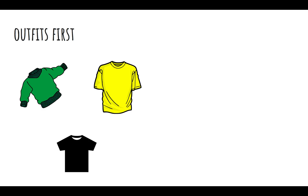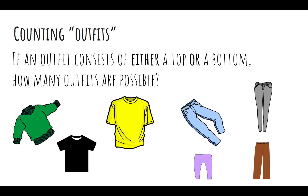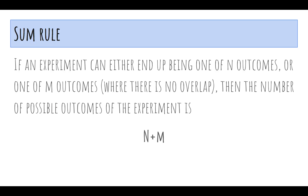Let's say you have three shirts and four pairs of pants. How many outfits are possible if an outfit consists of either a top or a bottom — which would be inappropriate? Well, you might say it's just seven, right? You just add them: three plus four. So that's actually the sum rule of counting. If an experiment can end up being one of n outcomes or one of m outcomes, where there's no overlap, then the number of possible outcomes is n plus m.